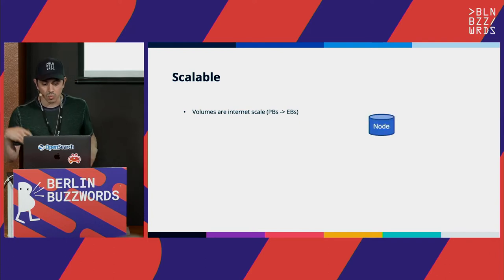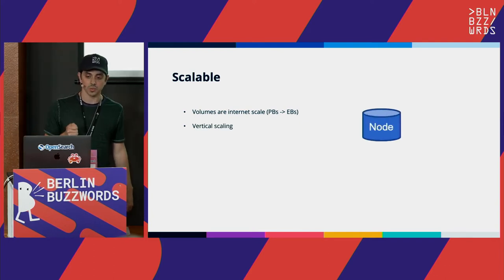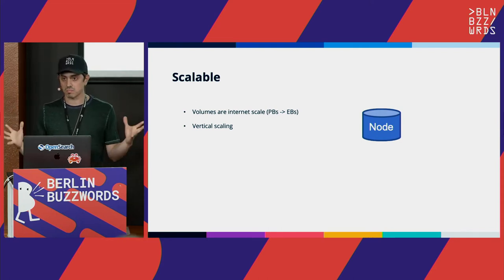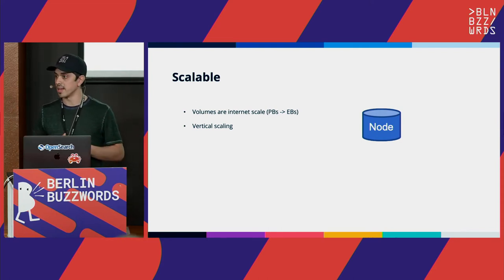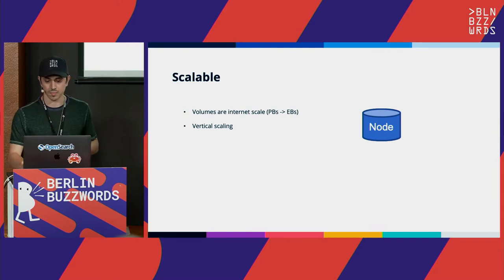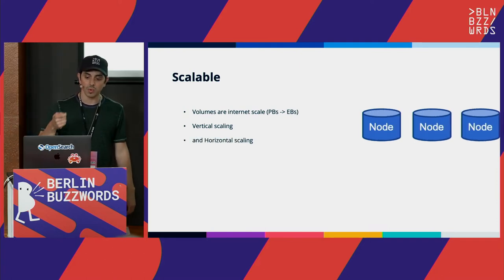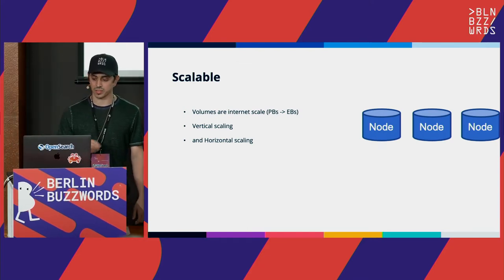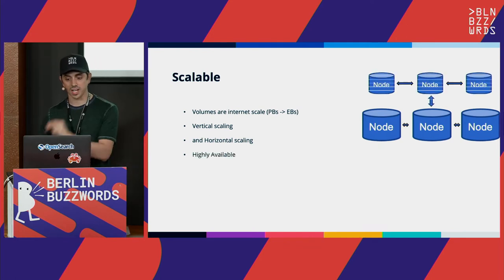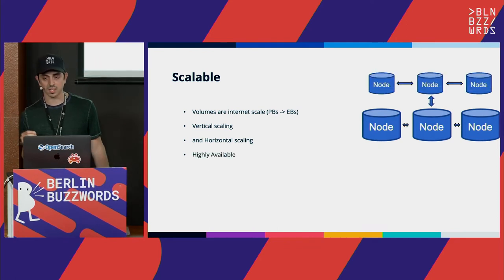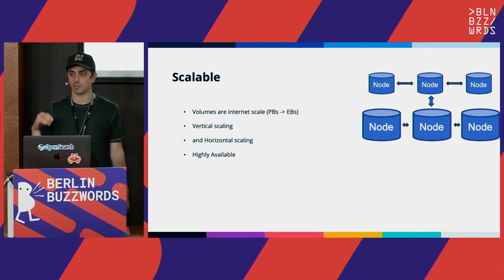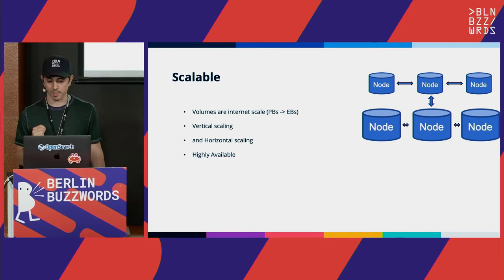Originally we built our tools to scale vertically, and this took us a little bit further, but it wasn't sufficient. So then we adapted our tools to be able to horizontally scale. And since our search engines are part of production applications, they also needed to be highly available. So we built replication features to make sure that we could have high availability deployments.